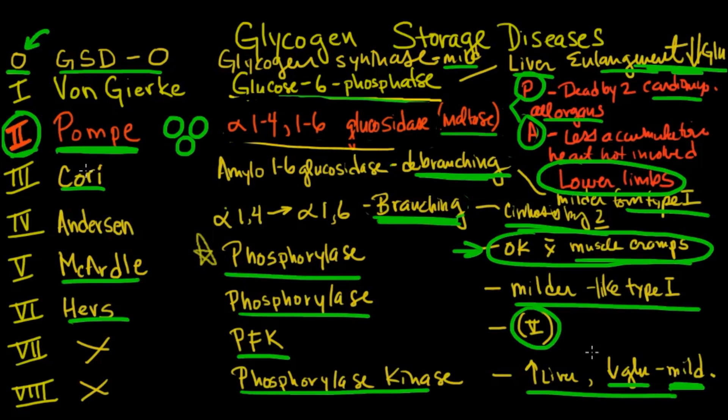Most of these are pediatric. They're dead by two. This is the alpha-1,4, the lysosomal, where things are just not broken down. And they get all sorts of problems with hepatomegaly. And again, it's almost always fatal in the pediatric population, certainly not something we're dealing with here.